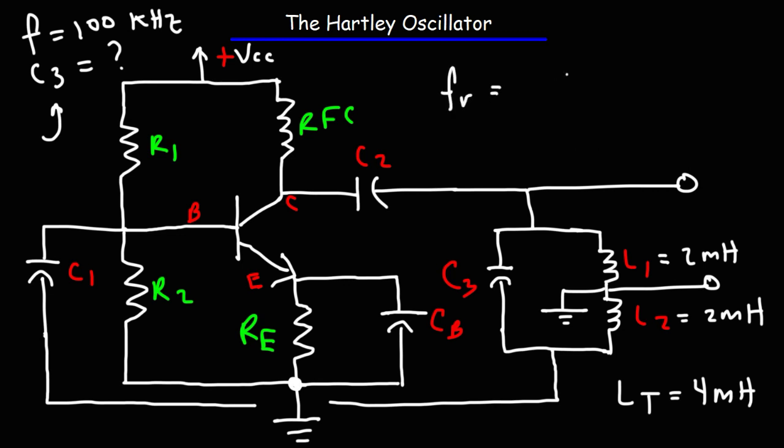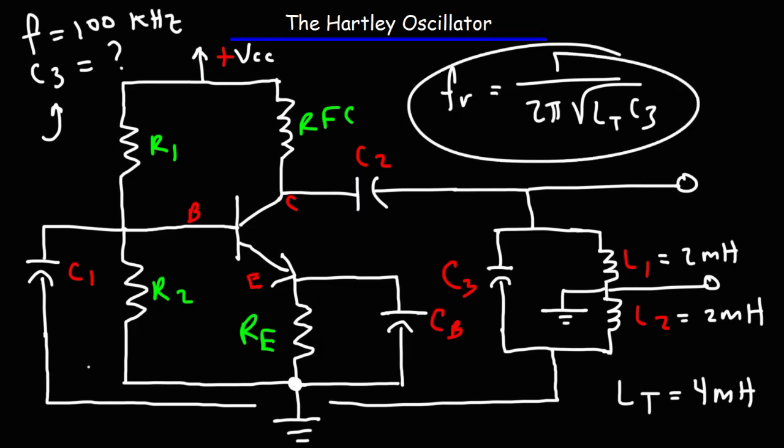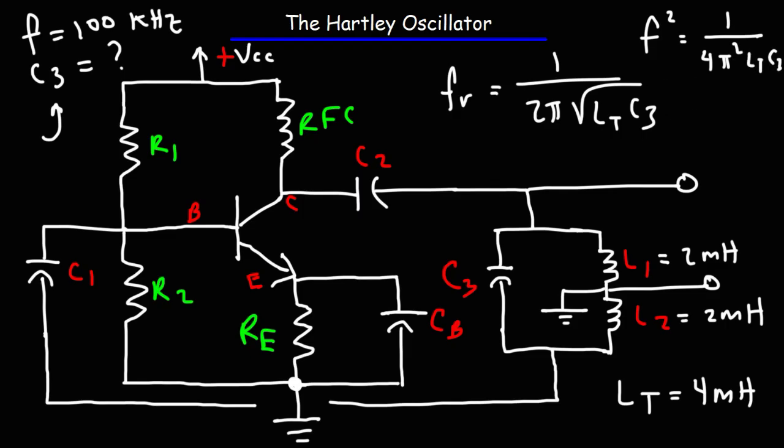And we know that the resonant frequency is 1 over 2π times the square root of LT times C3. So the first thing you want to do is square both sides of this equation. So you get F squared is equal to 1 over 4π squared, and the square root symbol will disappear. So we get LT times C3.